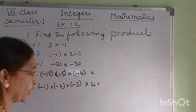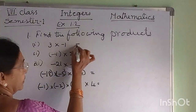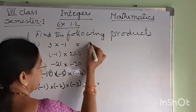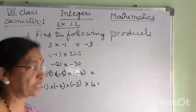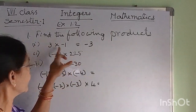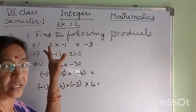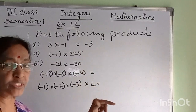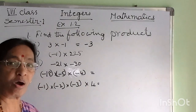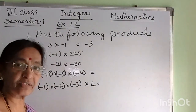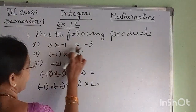Find the following products. 3 into minus 1: we multiply the numbers as in whole numbers and put the negative sign. If there is only one negative sign, we put a negative sign. If there are two negative signs, they become positive — minus into minus is positive. If the number of negative signs is odd, we get minus; if even, we get plus. Therefore 3 into minus 1 equals minus 3.